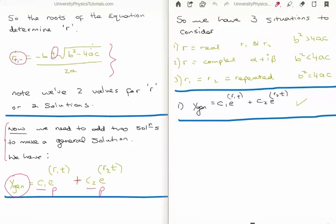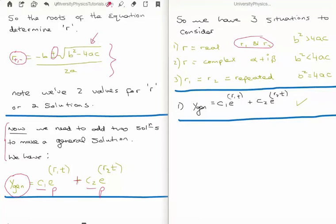In order to analyse the behaviour of the solution, we need to consider three situations. The value of r can be: first, real; second, complex; or third, repeated. If it's real, then r1 and r2 are real numbers. That's desirable because differential equations model real life and you can't have imaginary solutions. In order to get real roots, we need b² > 4ac; otherwise the square root yields a complex number.